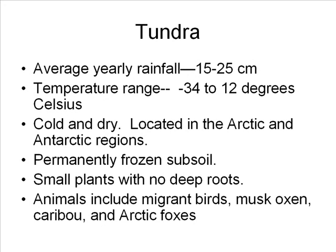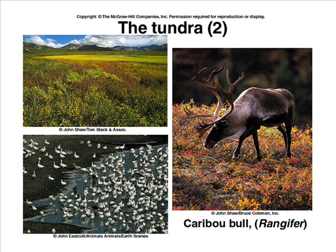In the tundra, the average yearly rainfall is 15 to 25 centimeters — very little. The temperature range is from negative 34 to 12 degrees Celsius, so the tundra is very cold and dry. It is found only in the Arctic and Antarctic regions.